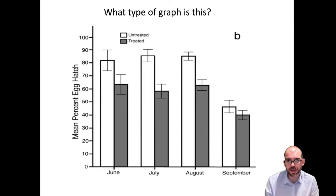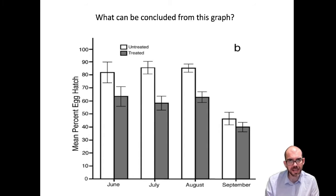Let's start with this graph. Here you can see on the y-axis we have the mean percentage egg hatch, and on the x-axis we have different months: June, July, August, and September. What type of graph are you being shown? Based on this data, what can you conclude on what's going on with the mean percentage egg hatch?